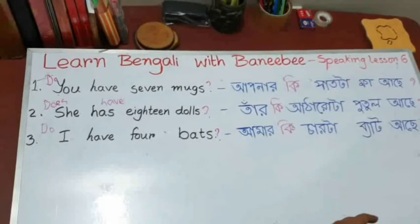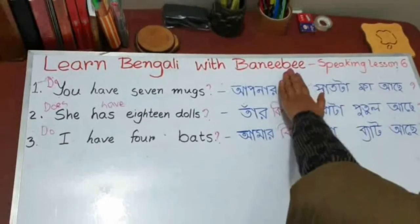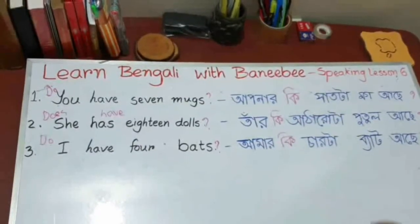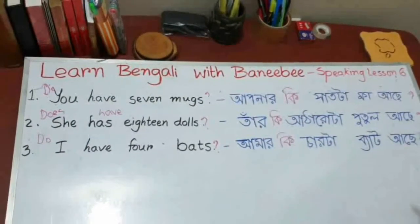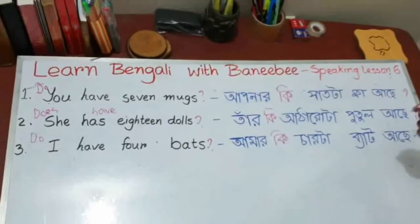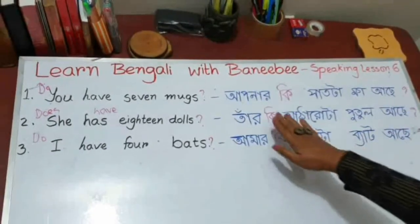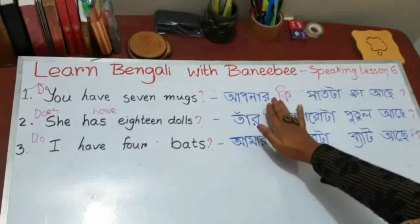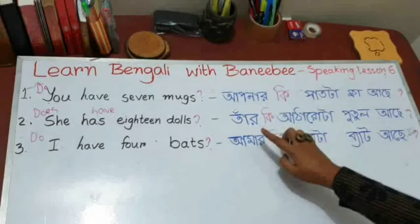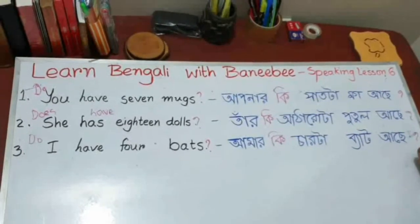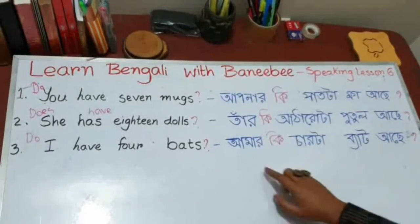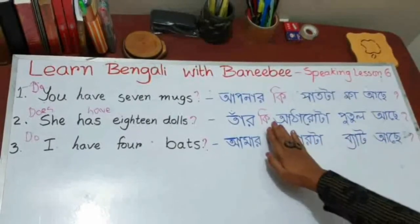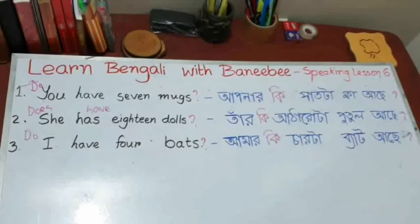Interestingly, even if you do not use the 'ki', if you just say 'aapnar shakta mob achhe?' — that's also a question, because of your tone. Because you have raised it a little bit at the end. I am not adding 'ki' now — just try to hear the tone. 'Tar aatharota putul achhe?' — also a question, even without the 'ki'. 'Aaman chakta bat achhe?' — even without the 'ki', this is a question.